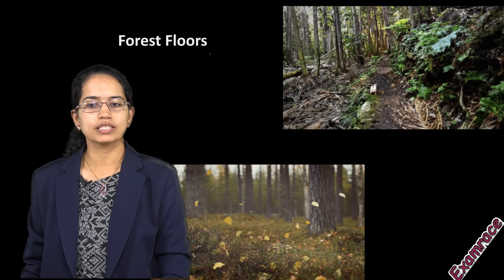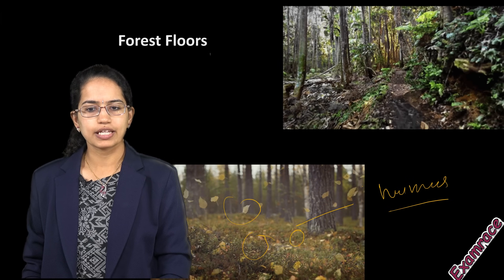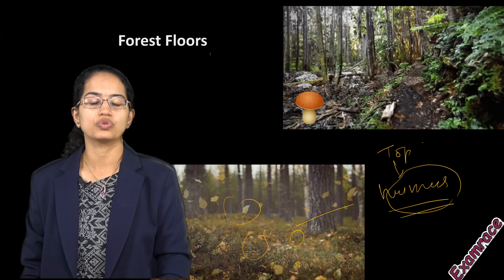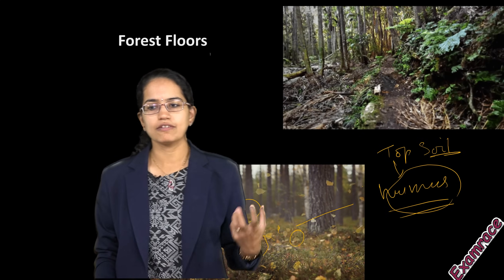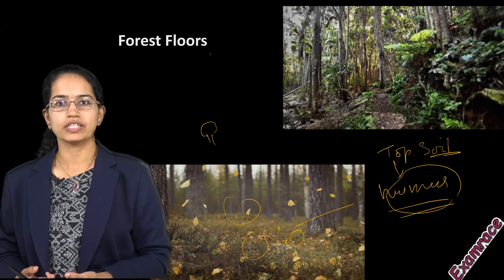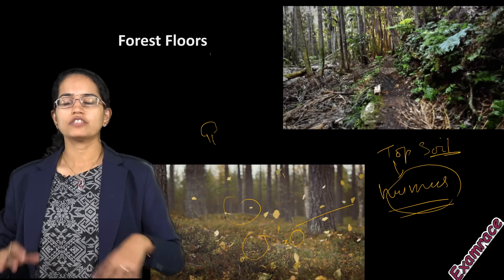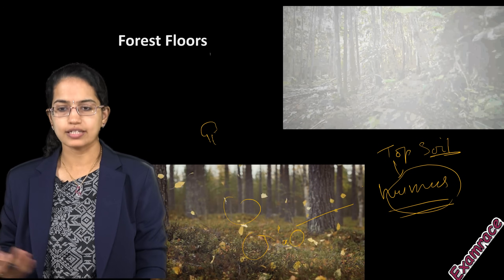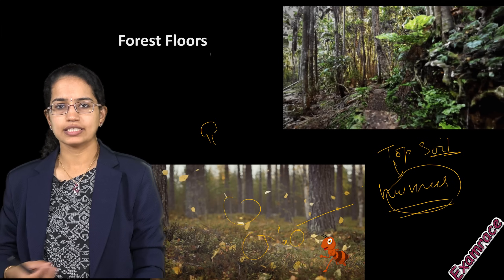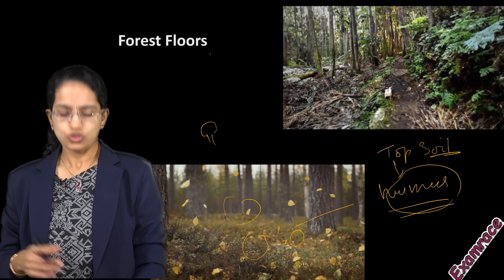Forest floors are sources of decaying matter. Leaves that fall and decompose over time form humus — a dark-colored, highly fertile topsoil. On dead decaying material, organisms like mushrooms grow, mainly seen where there are decaying plants. Dead animals are decomposed by scavengers such as vultures and jackals. Small animals and insects like ants are also seen on the forest floor, making it a highly active region.